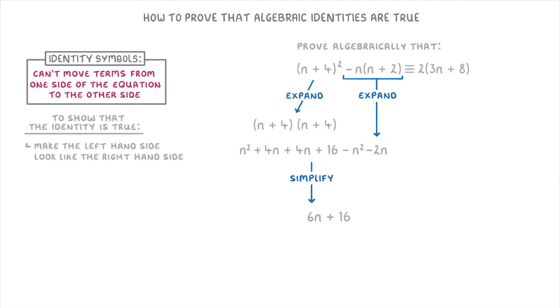Then the last step is to make it look like our right hand side. And for this, we need to factorise it by taking out the common factor of 2 to get 2 sets of 3n plus 8. And that's it. It now looks exactly the same as the right hand side.